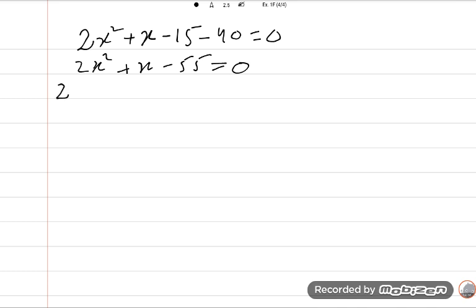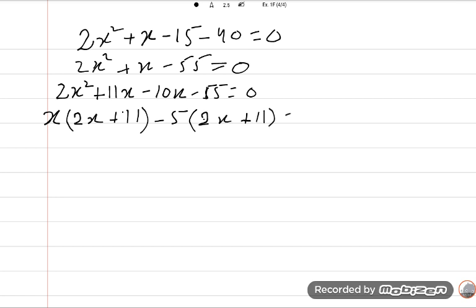I'll use the midterm break method. 2x square plus 11x minus 10x minus 55 is equal to 0. x is common, 2x plus 11, minus 5 is common, 2x plus 11. In these two terms, what is the common? 2x plus 11 into x minus 5 is equal to 0.